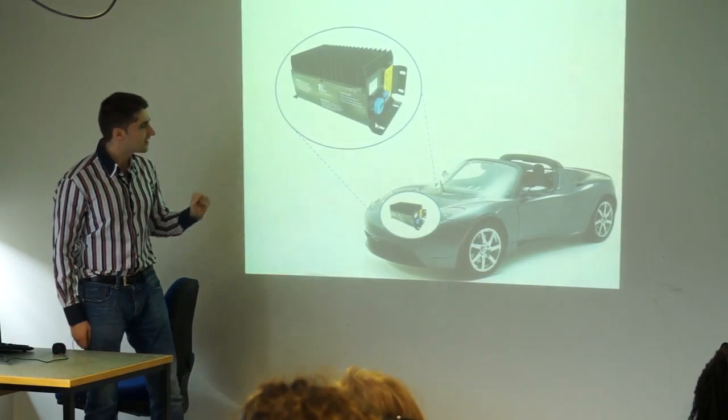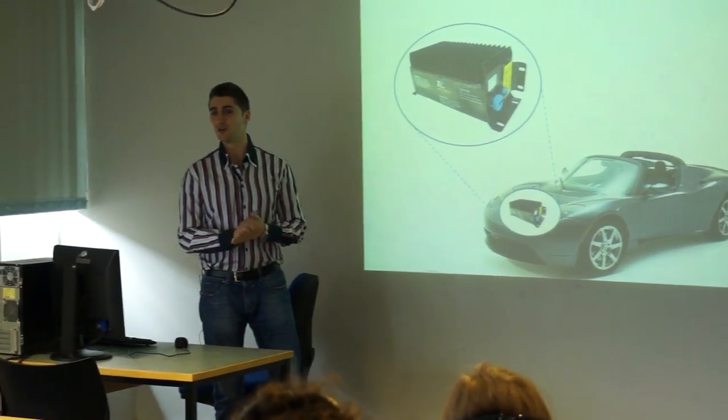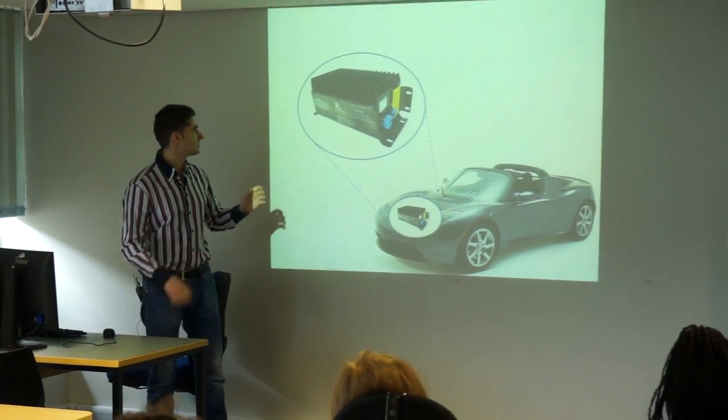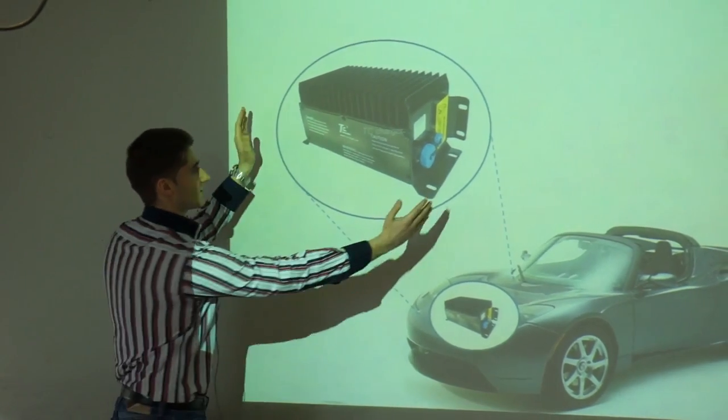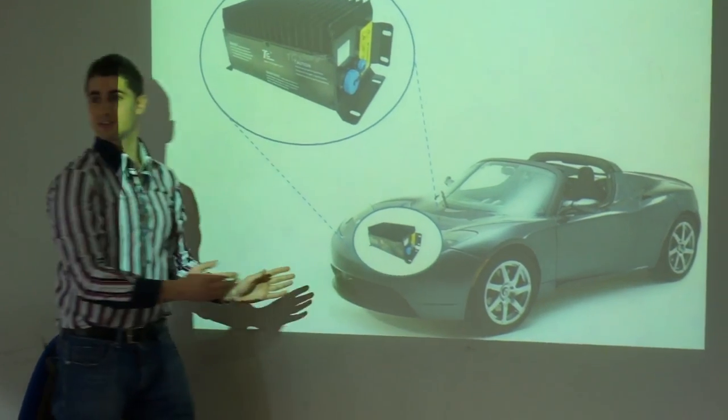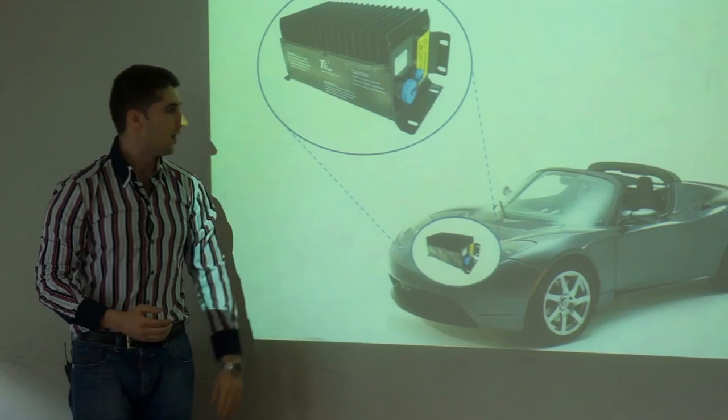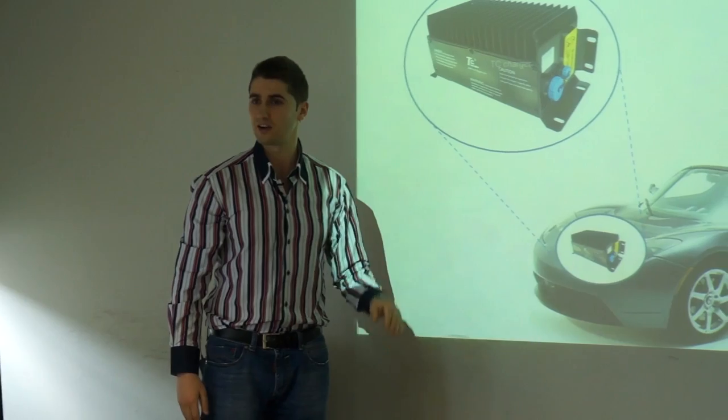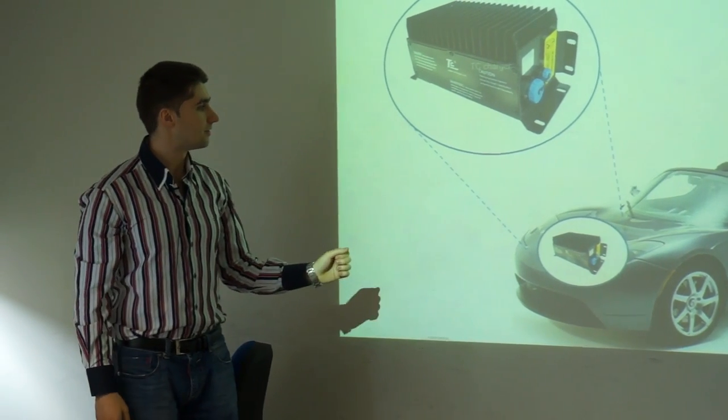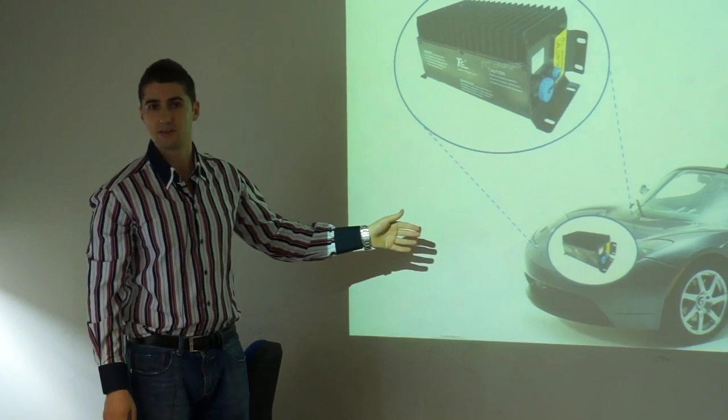But luckily enough, his vehicle is equipped with an on-board charger which means that actually off-board charger is made smaller and placed inside the vehicle. And now he's no longer dependent on DC charging stations. He can charge his vehicle anywhere from any AC mains.